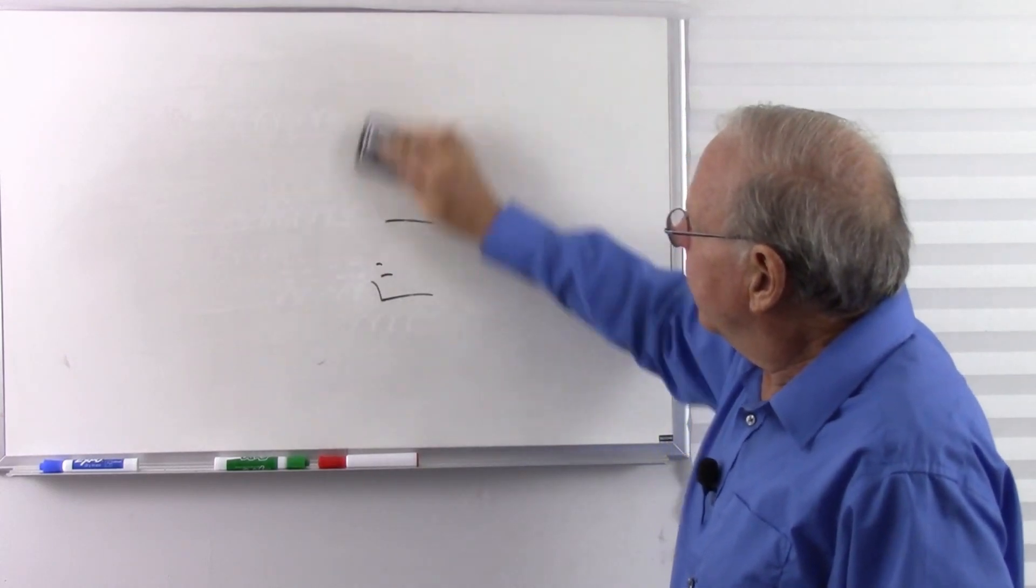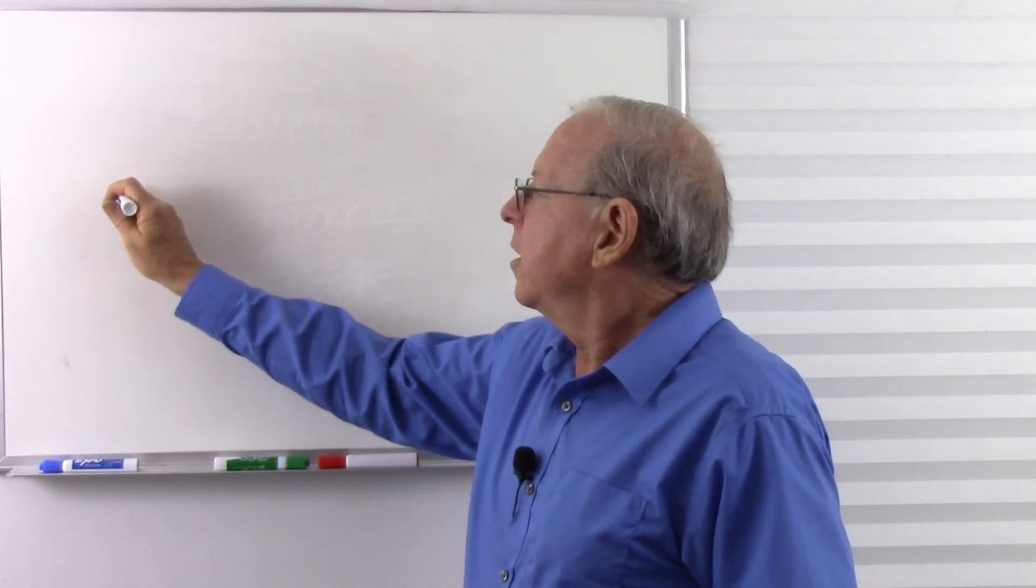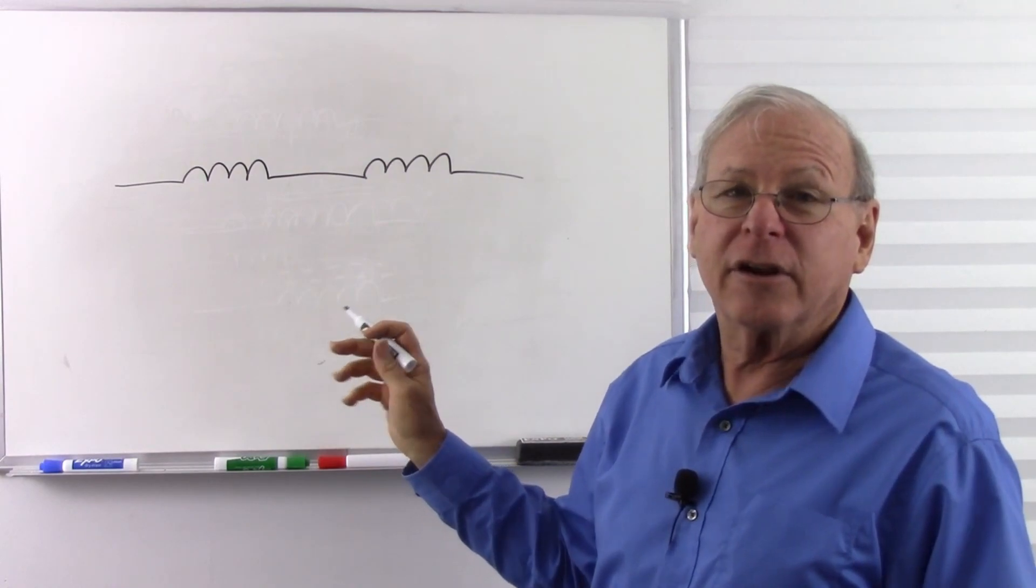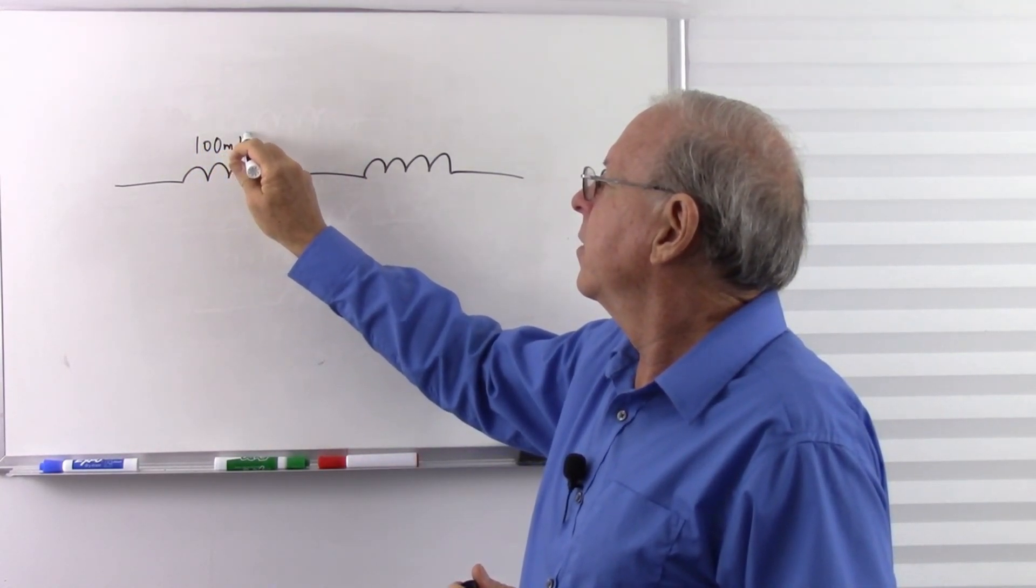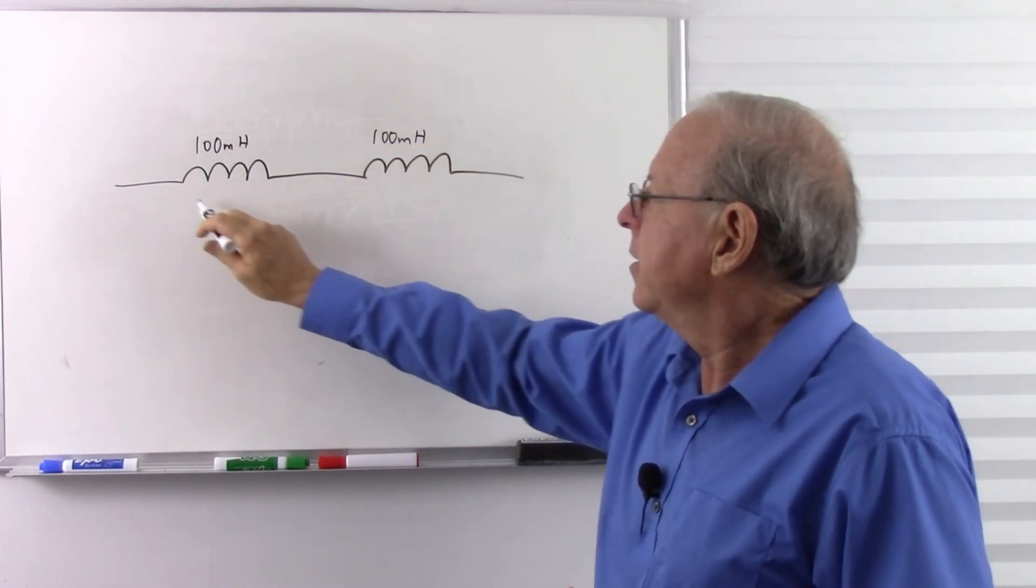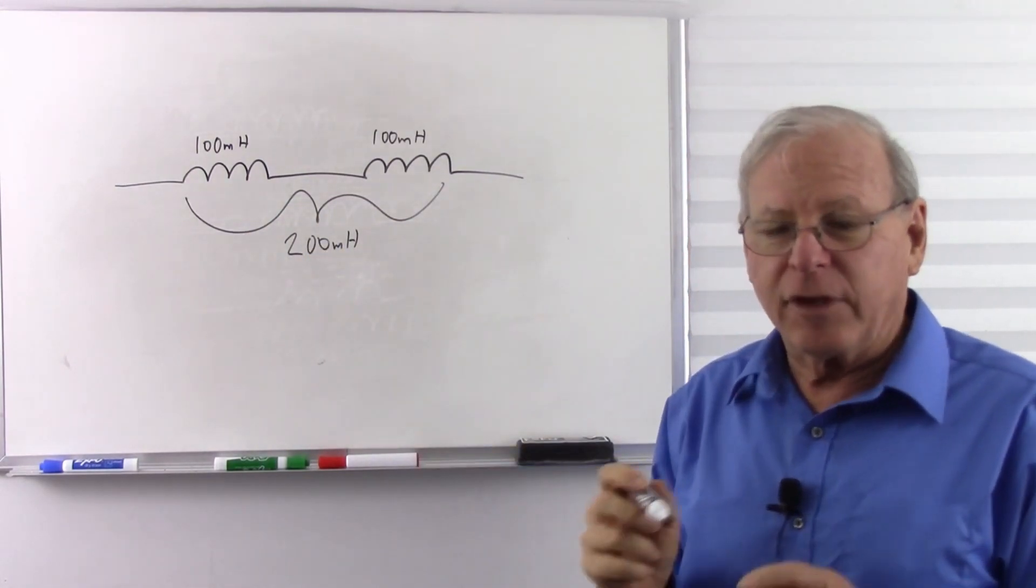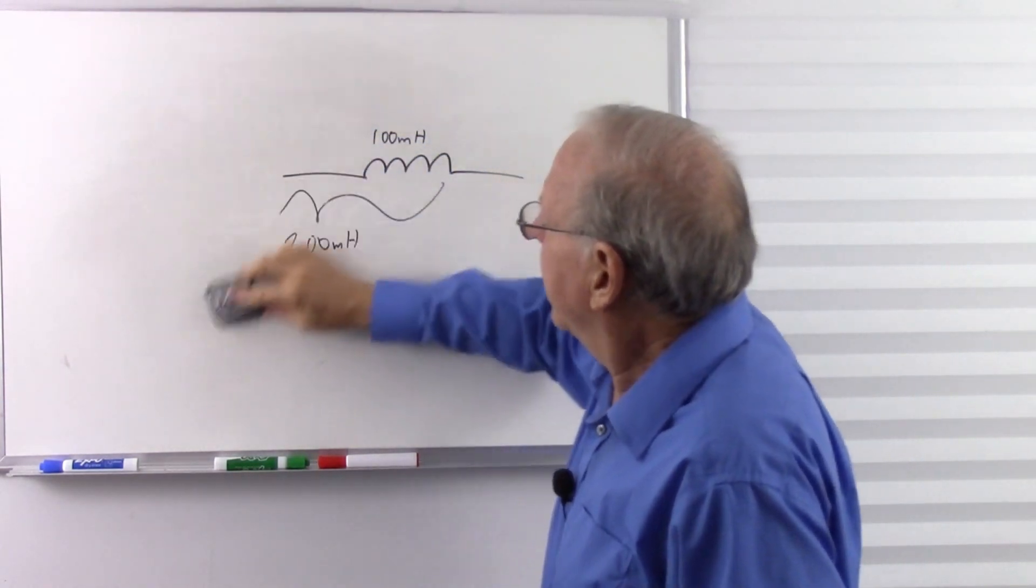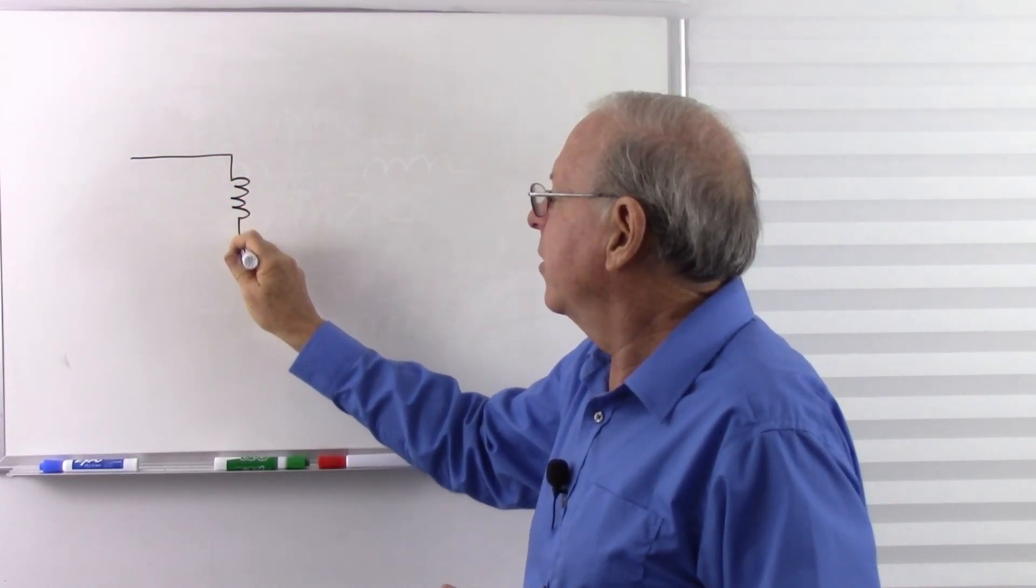Now let's take a look at what happens if we put these in a circuit and put them in series and in parallel. Well, if we put inductors in series, it's just adding inductance. It's just like a resistor. So 100 millihenrys, 100 millihenrys together. Easy peasy. And just like a resistor, if we put inductors in parallel, we have the same effect as resistors.